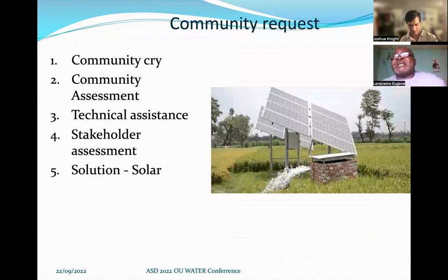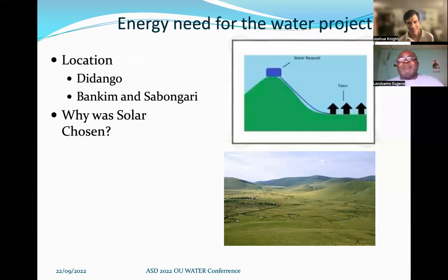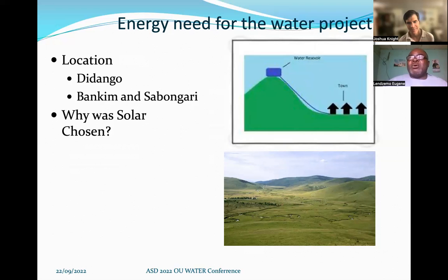The community came to us requesting assistance with water projects, which prompted us to do an assessment in association with Global Health Network and other stakeholders. We realized that the only solution was to provide solar water because of the community's geographical features. Bankim and Sabangare are on flat, gentle topography with wide valleys, and streams far from settlements. Jidango is below a big savannah mountain with springs far below. The only way to provide affordable water is to do a borehole with solar pumping to storage tanks and distribute by gravity.